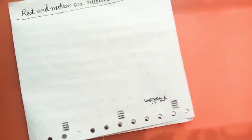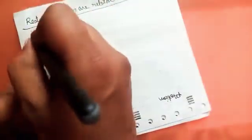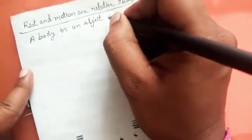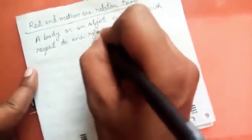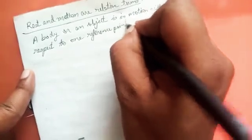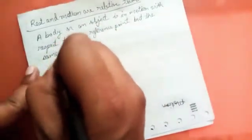So we can say a body or an object is in motion with respect to one reference point, but the same body may be at rest with respect to another reference point.